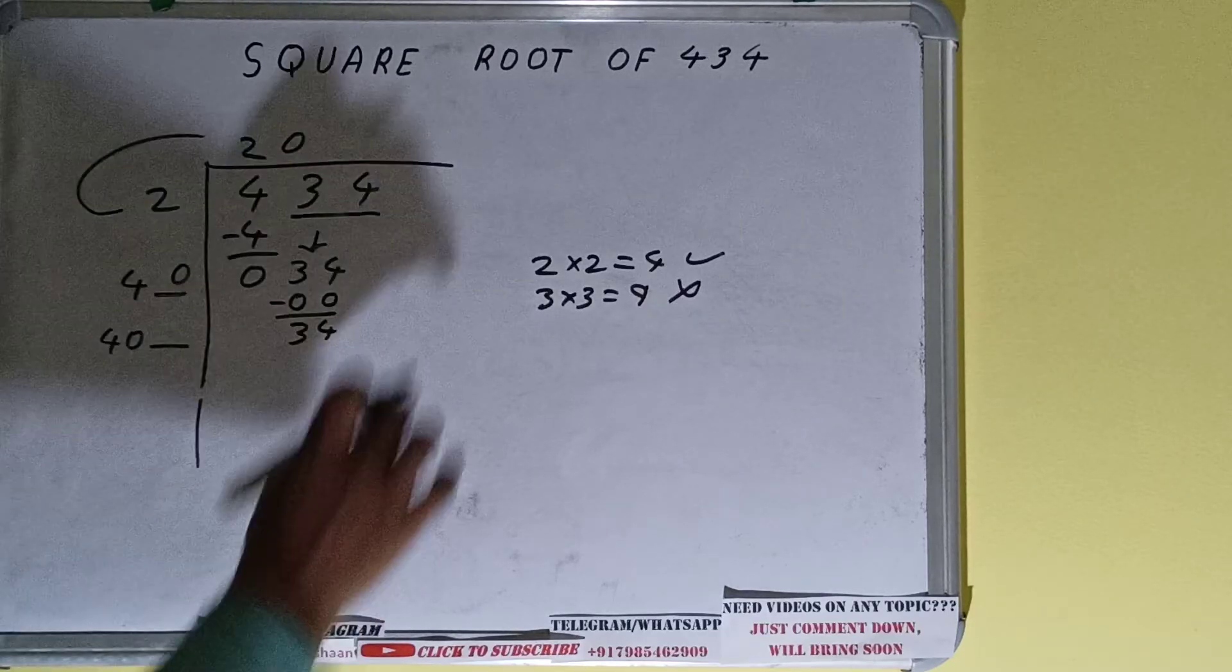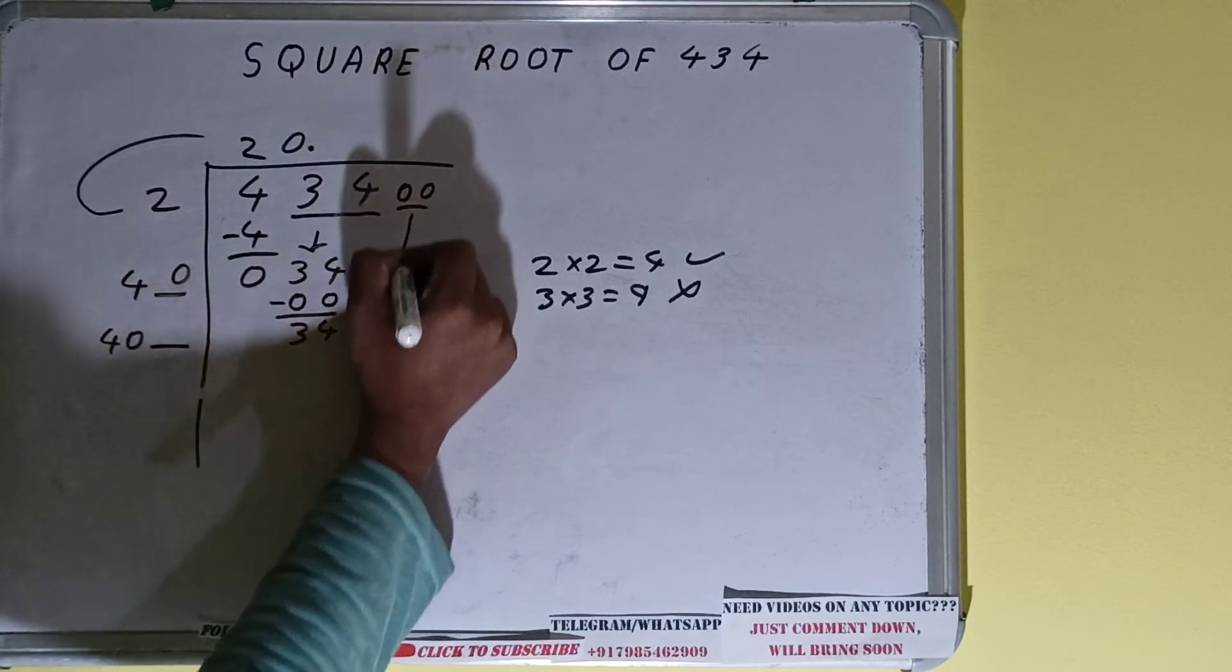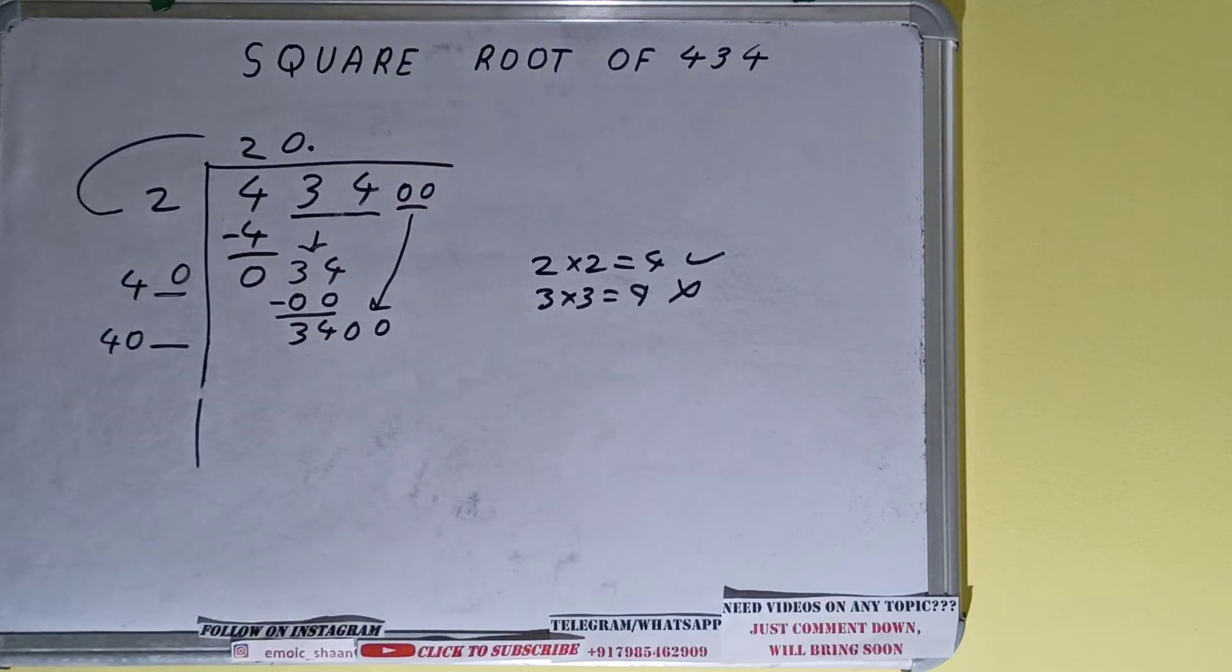But we don't have any more pairs, so we'll put a decimal. Once you put decimal, we can bring down a pair of zeros and the number will become 3400. So we can try 7 times or we can try 8 times.